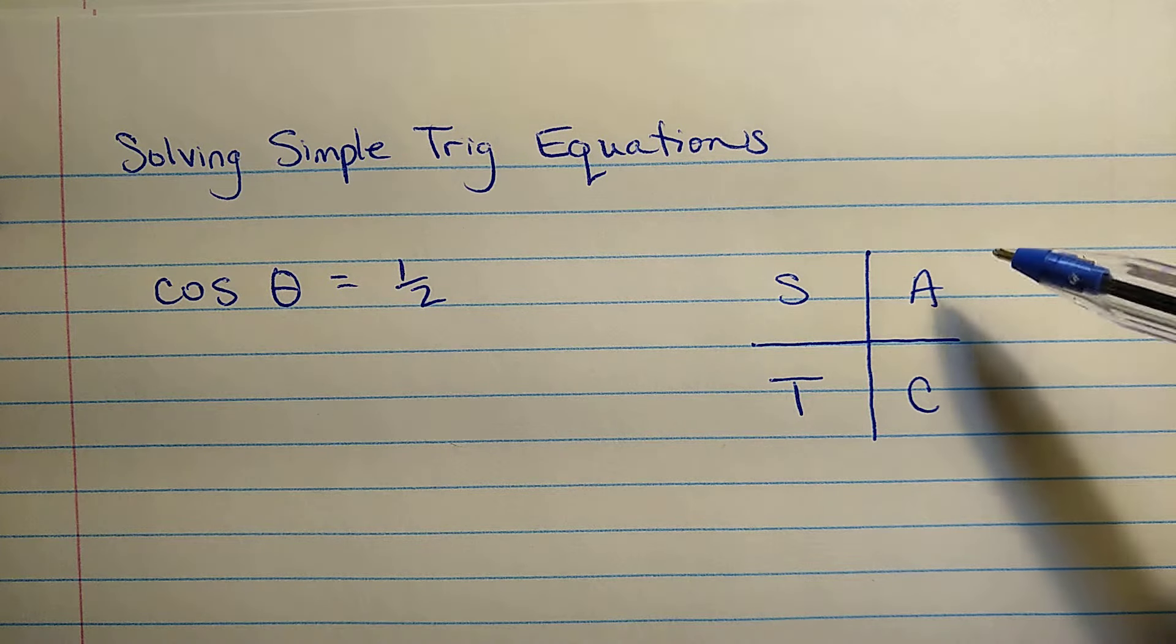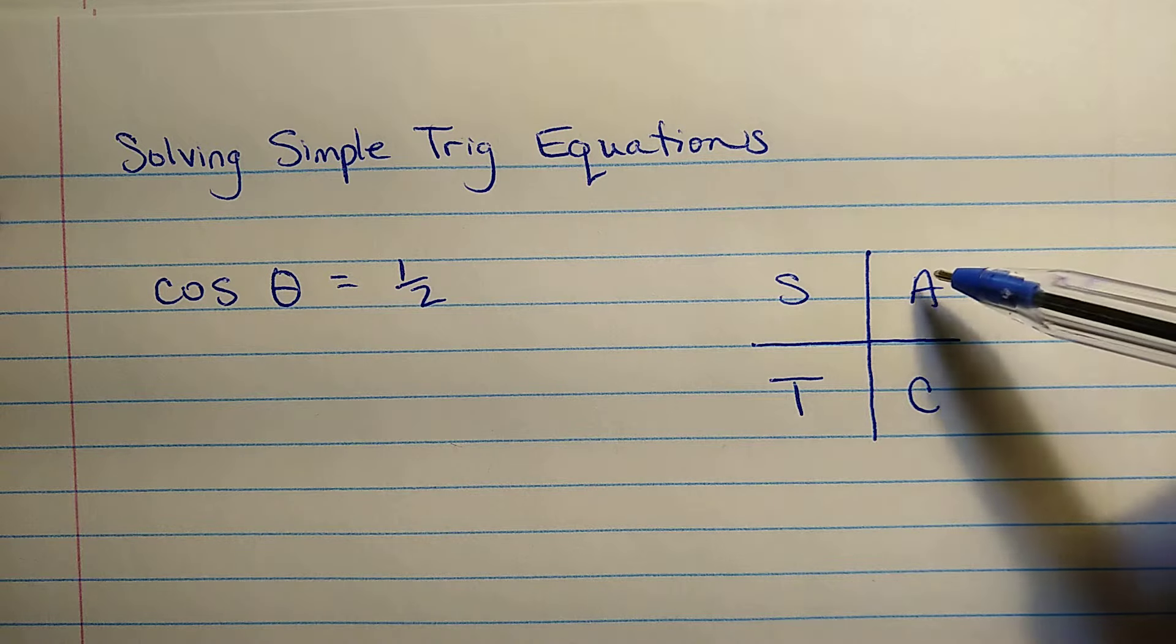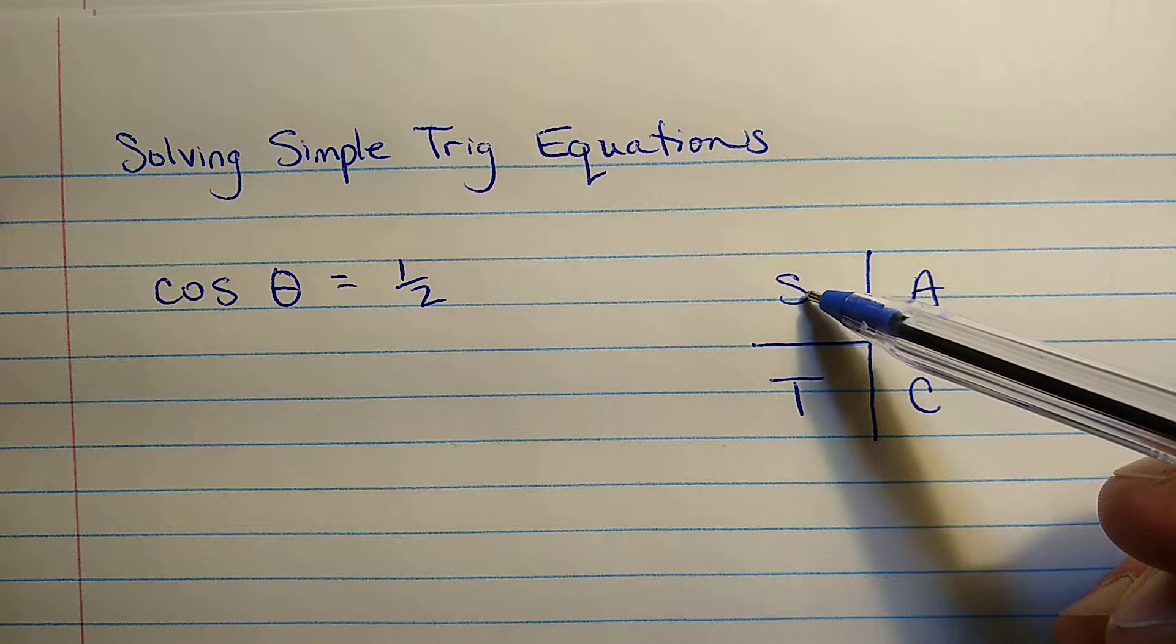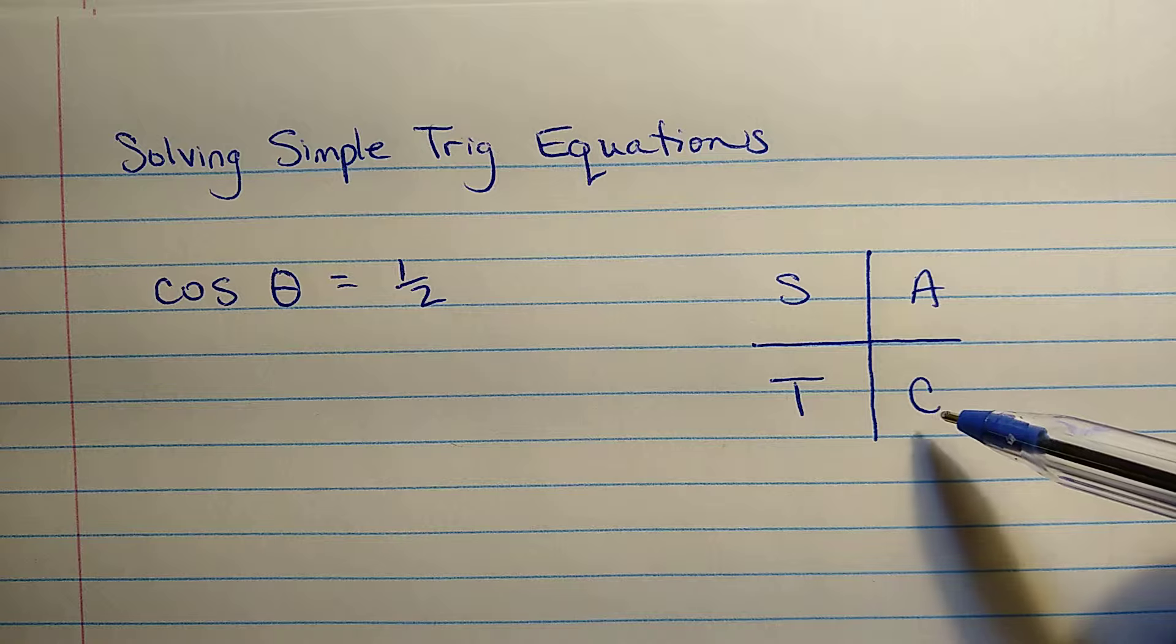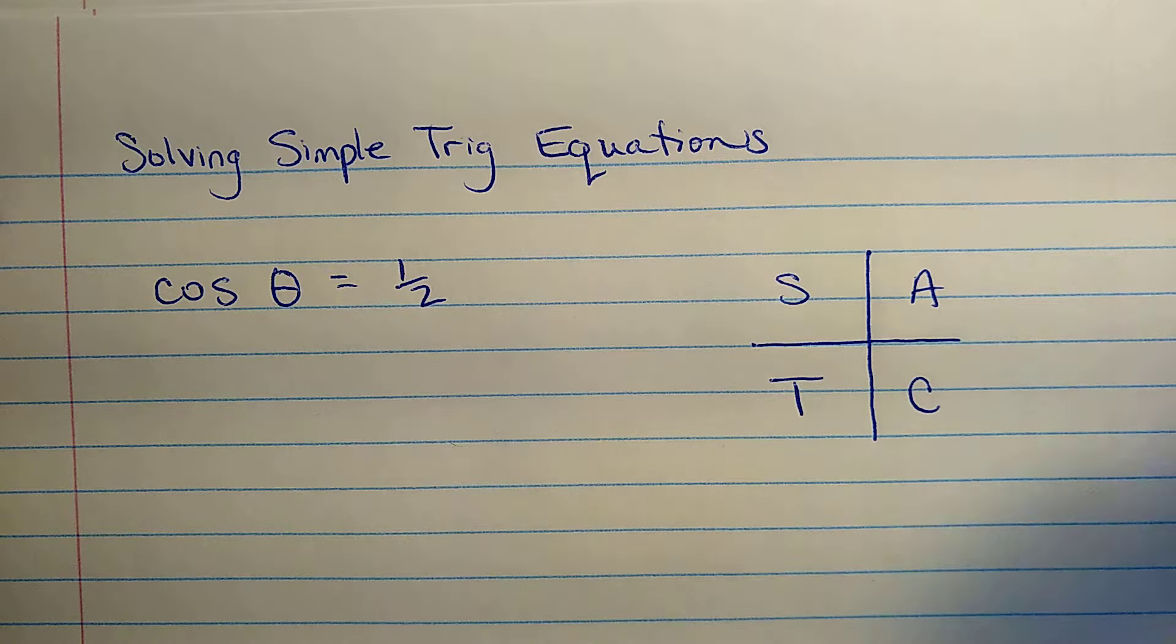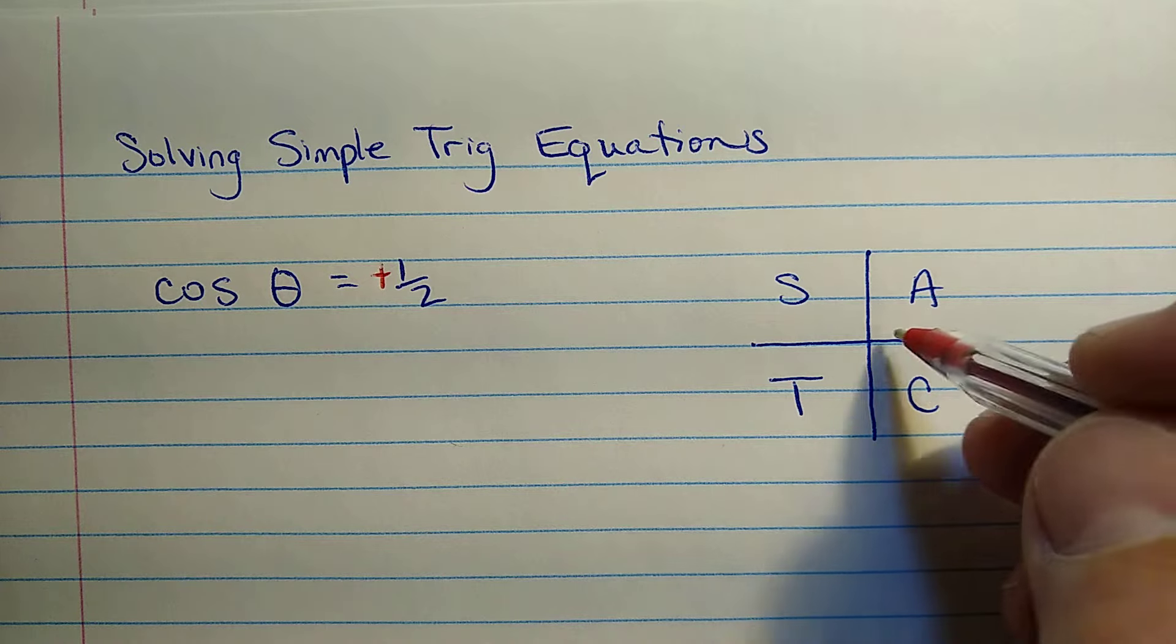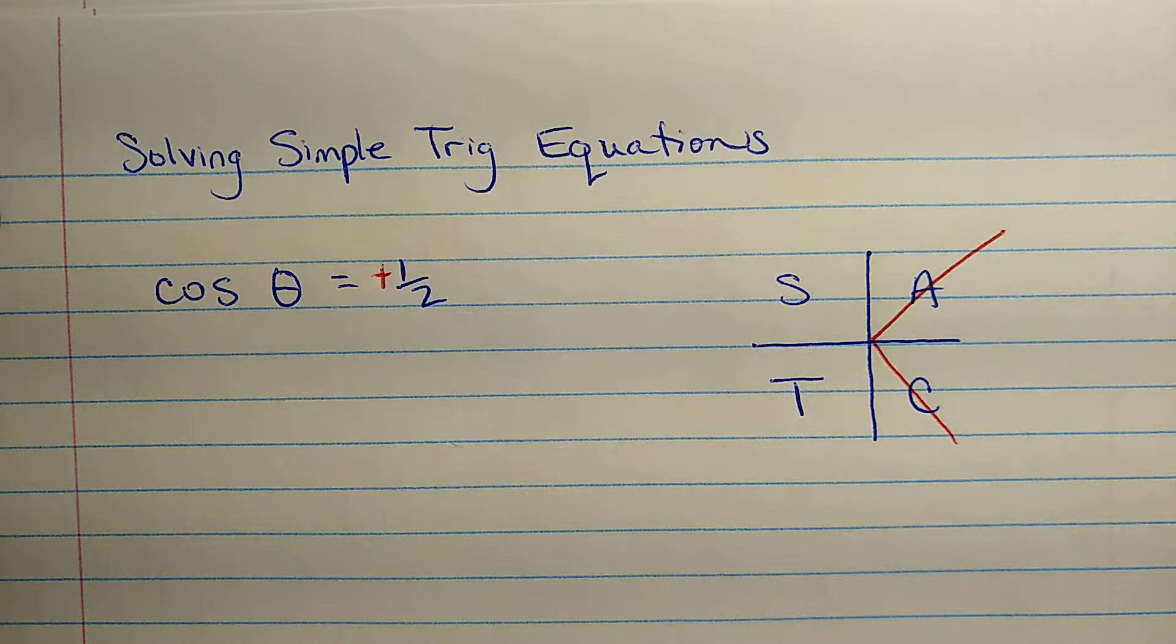So the CAST rule is just a reminder for us that of the three primary trig ratios, all of them give a positive result in the first quadrant. Only sine is positive in quadrant two. Only tangent is positive in quadrant three. And only cosine is positive in quadrant four. So what this tells us right away, because we see that cosine of the angle theta is positive one half, that means that we're going to get an angle that could be up here, and we could get an angle down here.